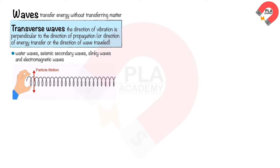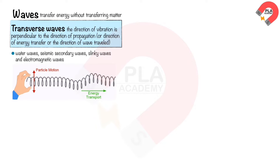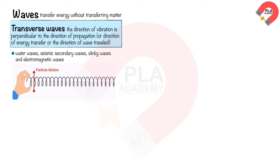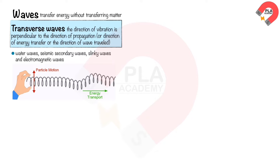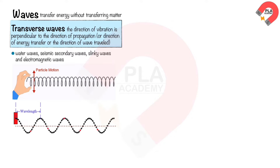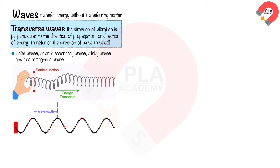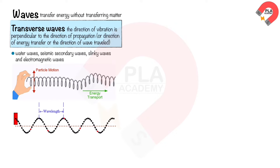We can demonstrate the transverse wave by shaking the spring up and down, as shown. The direction of vibration is up and down, which is perpendicular to the direction of wave propagation, or direction of energy transfer, or direction of wave travel, which is to the right. The direction of vibration is up and down around the equilibrium position.